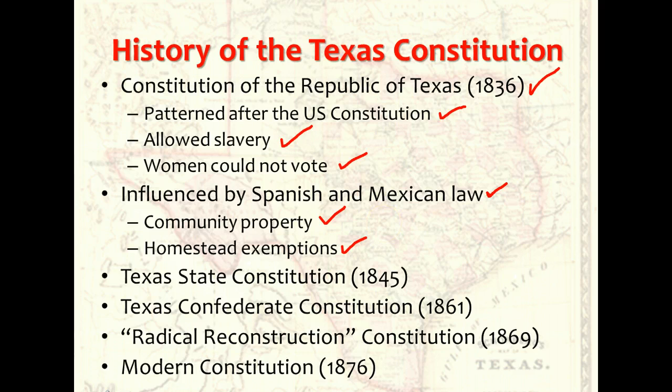To amend the constitution, one session of the Texas legislature had to approve the amendment, then the following session had to re-approve it, and finally the people of Texas had to adopt it by popular vote. This process proved to be so difficult that this original constitution was never amended.